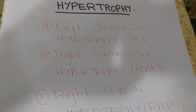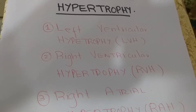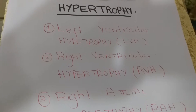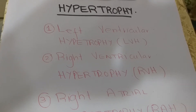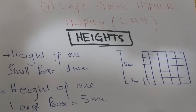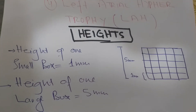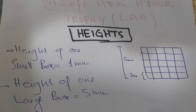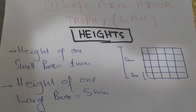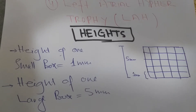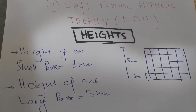In order to calculate measurements of these different chambers through the ECG paper, we should first know the height of the small and large boxes, because these measurements help us better understand the presence or absence of hypertrophy. On the ECG paper, the height of one small box is one millimeter and the height of one large box is five millimeters.